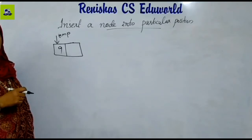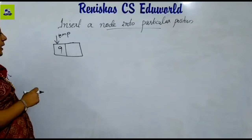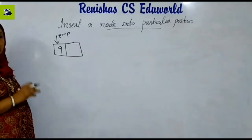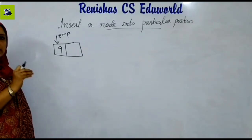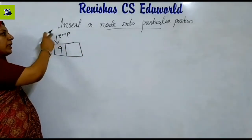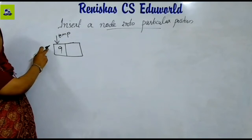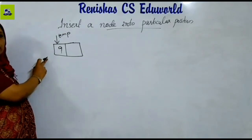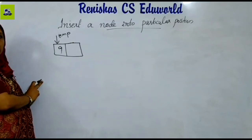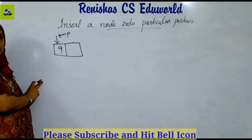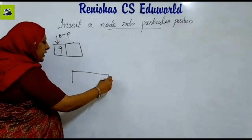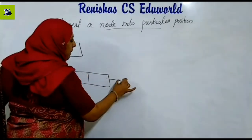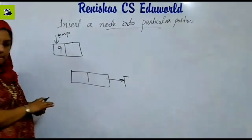If we want to insert a node at a particular position, we need to verify the position is valid. This linked list has 5 nodes. If the position exceeds the list size, it is an invalid position. The linked list has more than one element to consider.